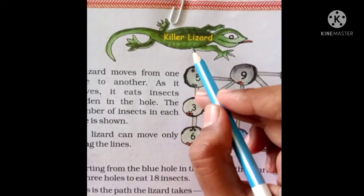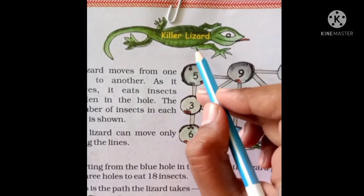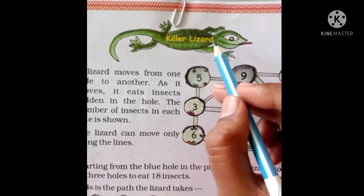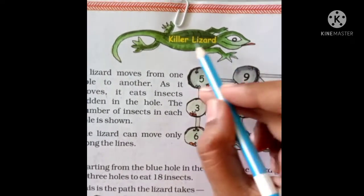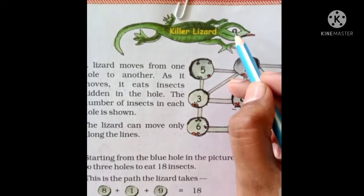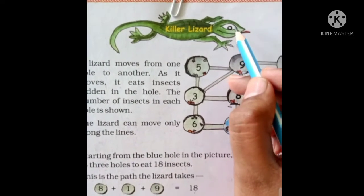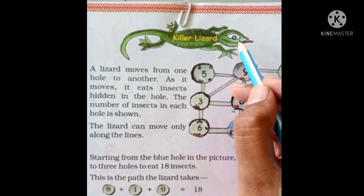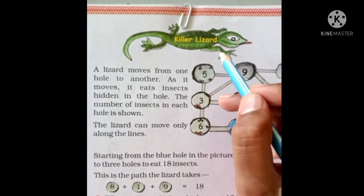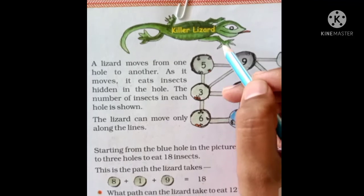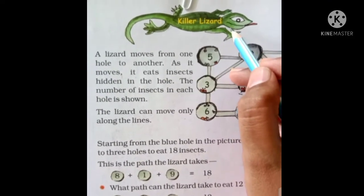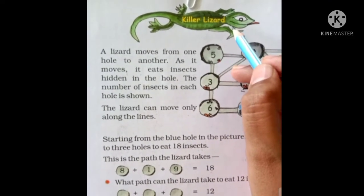Lizard dekhiya aap mein — aapke ghar mein bhi hokti hain kabhi kabhi? This is a Killer Lizard. See the color — it's green. Very poisonous, very deadly hoti hain. Generally it's not like this, but here the green color is given.